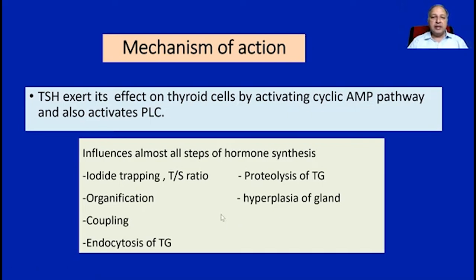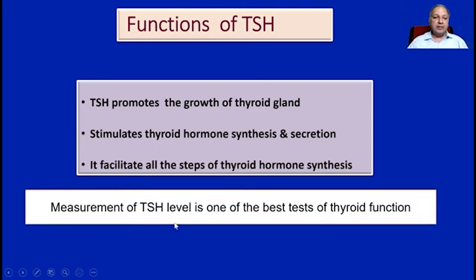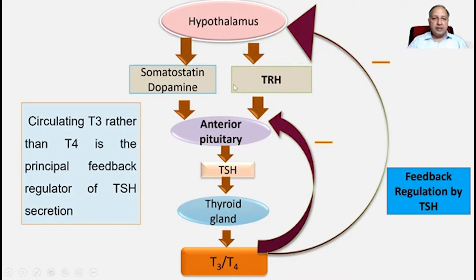Functions of TSH: thyroid stimulating hormone promotes the growth of the thyroid gland, stimulates thyroid hormone synthesis and secretion, and facilitates all steps of thyroid hormone synthesis. Importantly, measurement of TSH level is one of the best tests of thyroid function. The hypothalamus causes the release of both inhibitory and stimulatory factors. The stimulatory factor is TRH, which acts on the anterior pituitary to stimulate TSH release. Hypothalamus also releases somatostatin and dopamine which inhibit TSH, but the main control is stimulatory in nature.